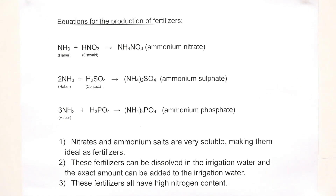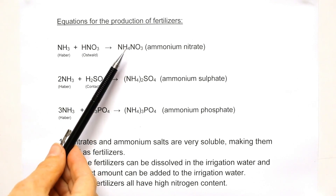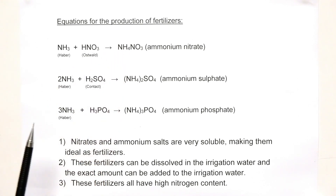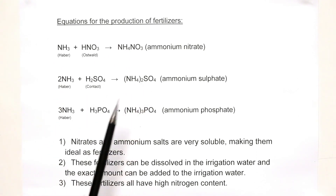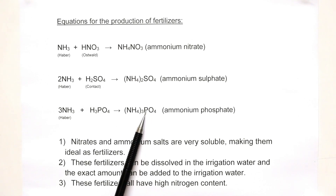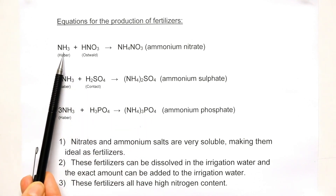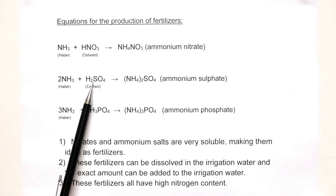You must know the following reactions for the production of fertilizers very well. Firstly, ammonia reacts with nitric acid to form ammonium nitrate — an important fertilizer, very rich in nitrogen. Secondly, ammonia reacts with sulfuric acid to form ammonium sulfate. And thirdly, ammonia reacts with phosphoric acid to form ammonium phosphate. You need to know how ammonia is made in the Haber process, how nitric acid is made in the Ostwald process, and how sulfuric acid is made in the contact process.